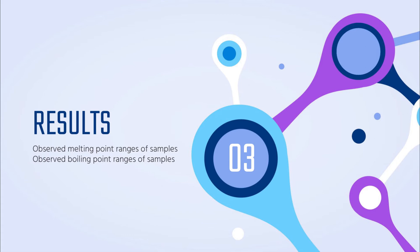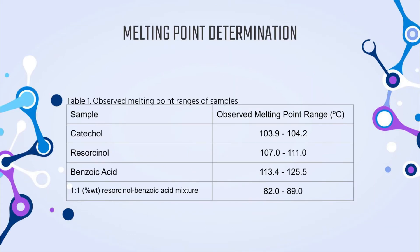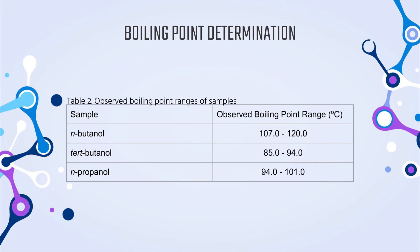Moving on to the results: the observed melting point ranges are as follows — catechol: 103.9 to 104°C; resorcinol: 107 to 111°C; benzoic acid: 113.4 to 125.5°C; and the 1:1 resorcinol-benzoic acid mixture: 82 to 89°C. For the boiling point ranges: n-butanol has an observed range of 107 to 120°C; tert-butanol, 85 to 94°C; and n-propanol, 94 to 101°C.